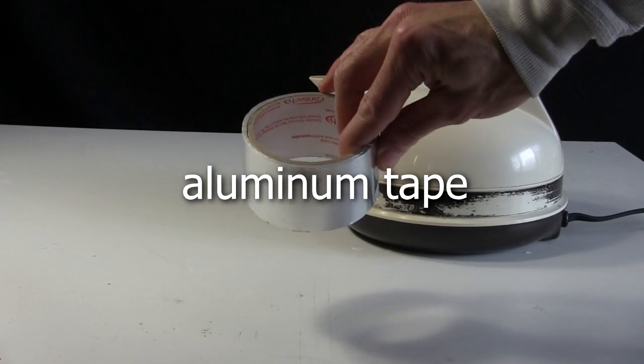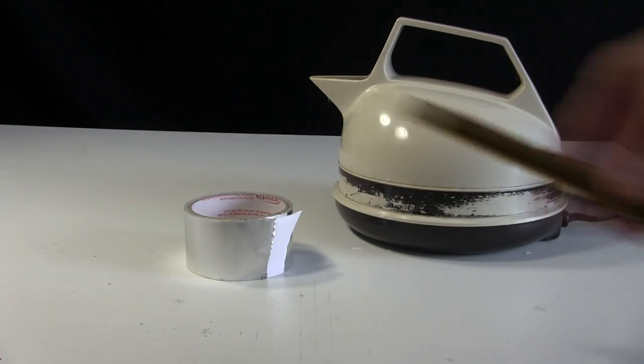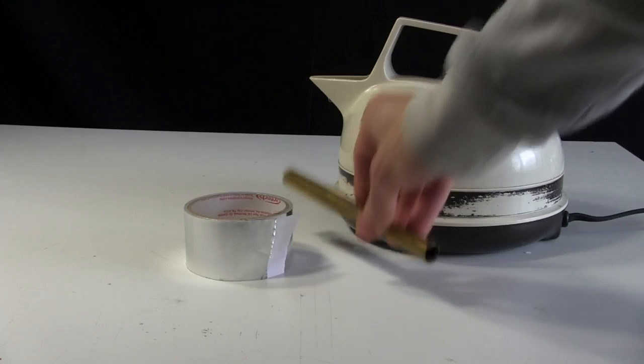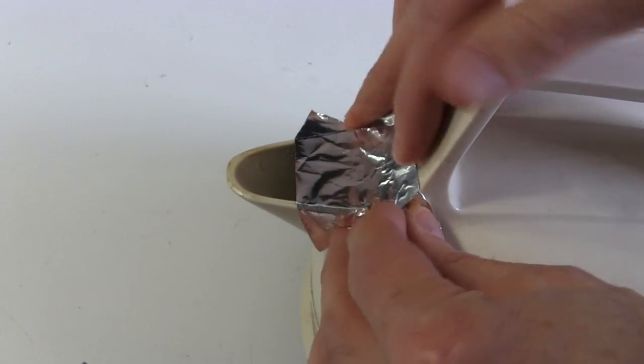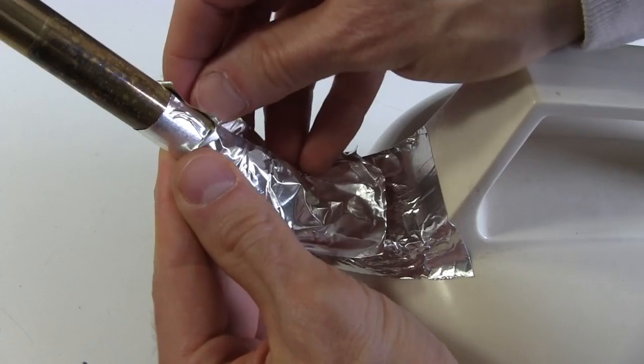For this I need some aluminum tape, since it handles high temperatures fairly well, and a tube of some sort that won't melt or be damaged by the water. I'm using a brass tube from a hobby shop. Tape it to the opening of the kettle like I'm doing here.